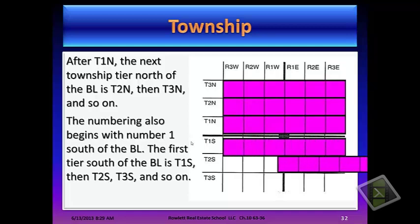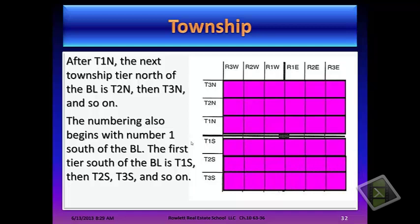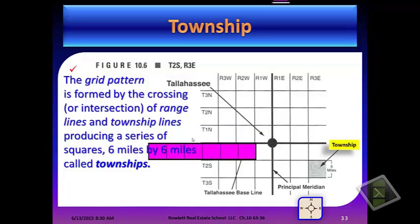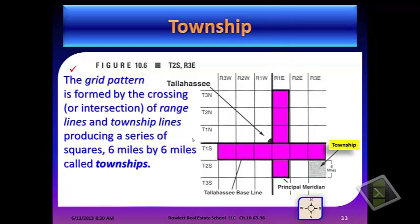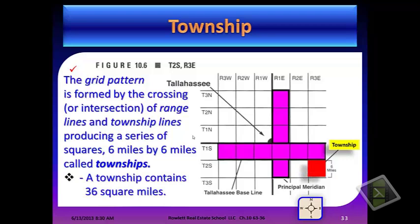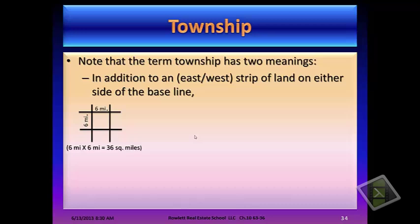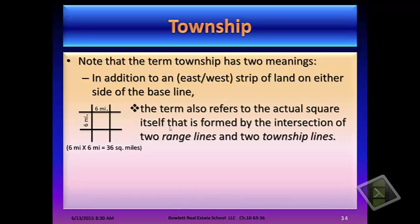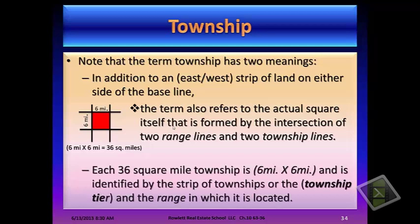Numbering also begins with 1 south of the baseline. The first number south of the baseline is T1 south, then T2 south, then T3 south, and so on. The grid pattern is formed by the crossing of range lines and township lines, producing a series of squares six miles by six miles called townships. A township contains 36 square miles — six times six is 36. Note that the term township has two meanings: in addition to being an east-west strip of land on either side of the baseline, the term also refers to the actual square formed by the intersection of two range lines and two township lines. Each 36-square-mile township is six miles by six miles and is identified by a township tier and a range in which it is located.